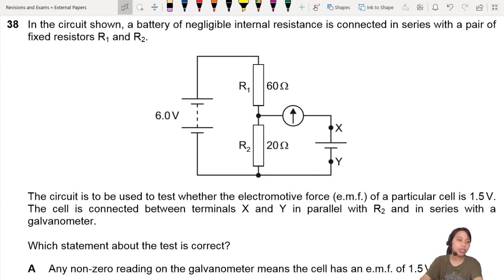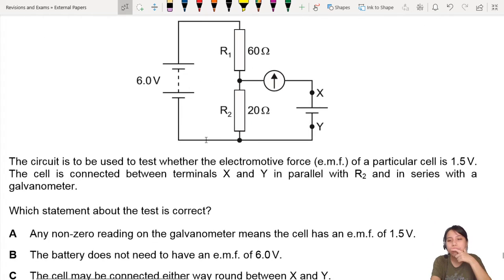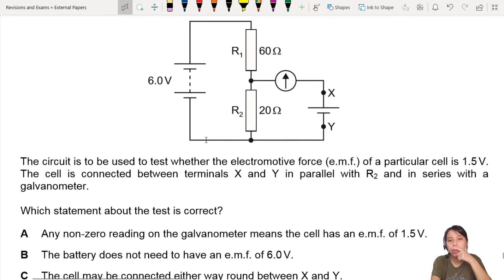This is a challenge topic, quite interesting - potentiometers. A circuit shown has a battery of negligible internal resistance connected in series with a pair of fixed resistors. The circuit is used to test whether the EMF of the cell is 1.5 volts or not.